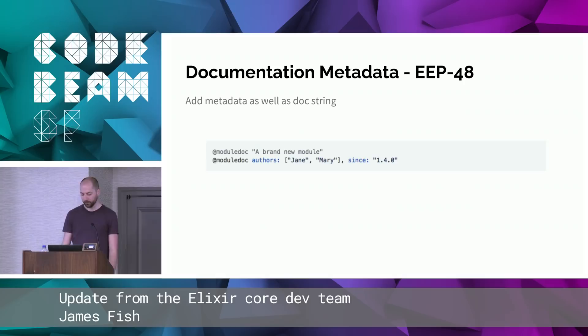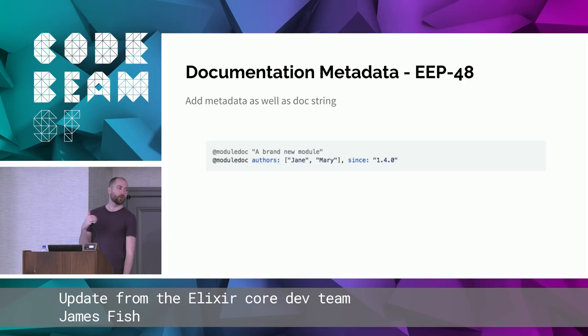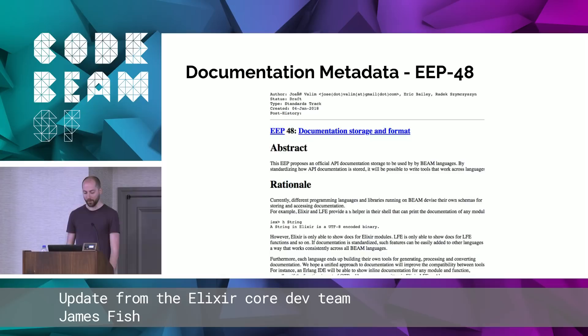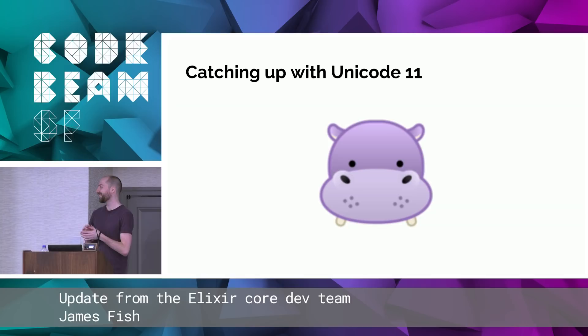Documentation was also improved — you can now add metadata to documentation. This was part of a proposal sent to Erlang, EEP 48. An EEP is how you propose a change to Erlang; people can discuss it. You can attach documentation strings and metadata to a BEAM file and then fetch it in the shell. This is what an EEP looks like — you can see at the top it says author Jose, except that's not Unicode. So we also caught up with Unicode 11. My favorite emoji added in Unicode 11 is the hippo.